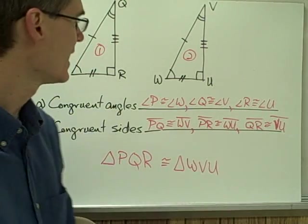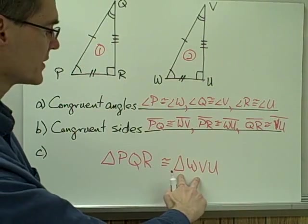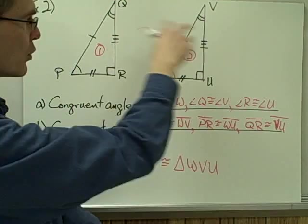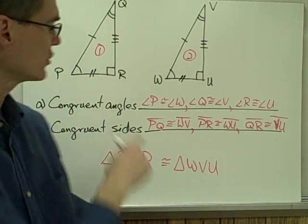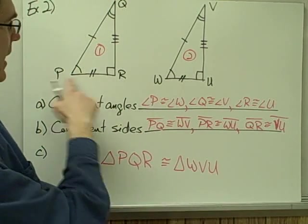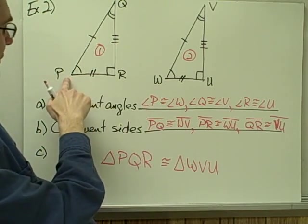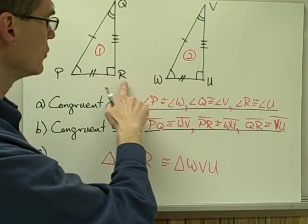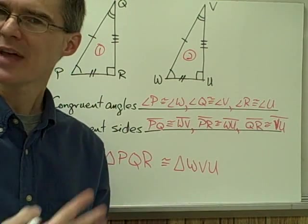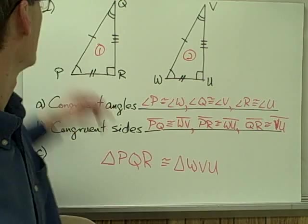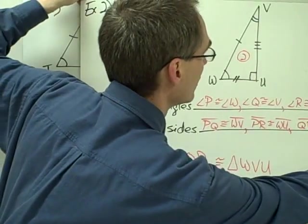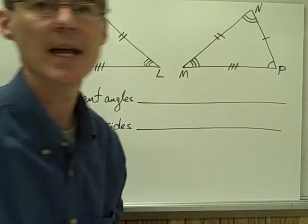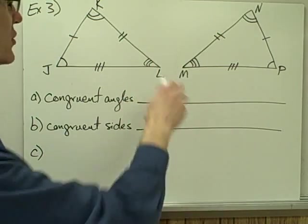For these first two examples, it was fairly straightforward to write down our congruence statement and get the vertices in the proper order, because the two triangles had the same orientation — their angles were already matched up. Angle P and W were both on the left side, angle Q and V both at the top, angle R and U both on the bottom right. Let's take a look at an example where it's not quite as easy because our triangles are not oriented the same way.